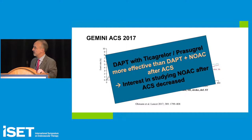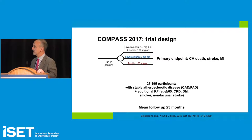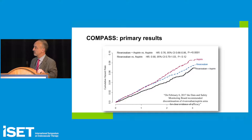Then came the COMPASS trial — the granddaddy of the trials. With 27,000 patients with coronary disease, peripheral arterial disease, or prior stroke, and follow-up of almost 2 years, rivaroxaban plus low-dose aspirin was the most effective in reducing thrombotic and cardiovascular events. Stroke reduction was almost half in the rivaroxaban plus aspirin group compared to aspirin alone — a major benefit of this strategy.